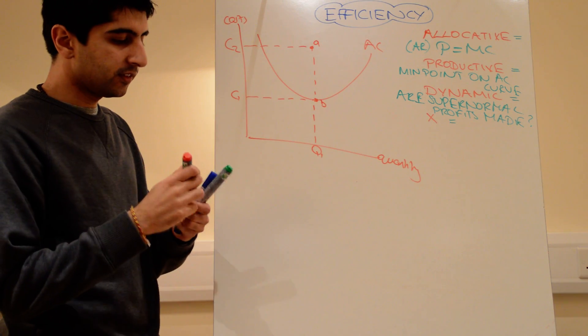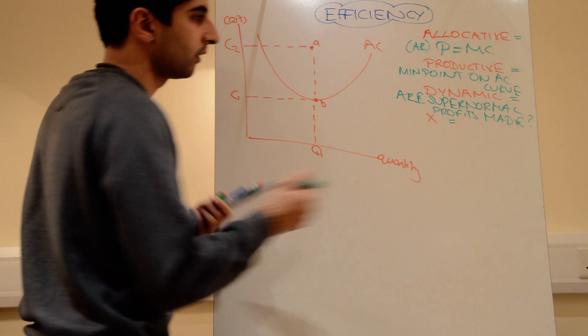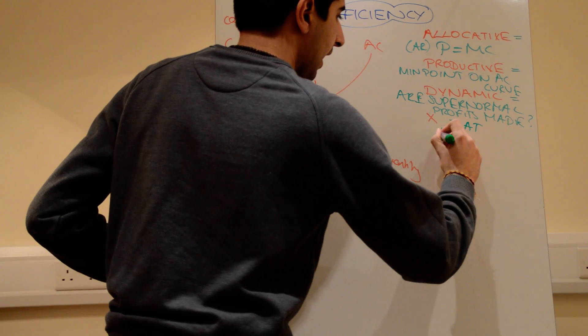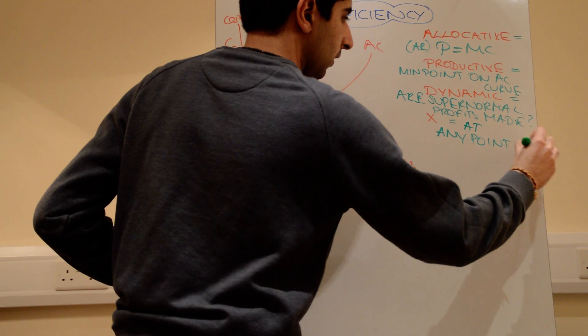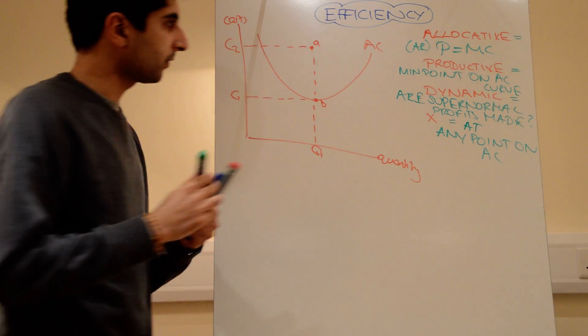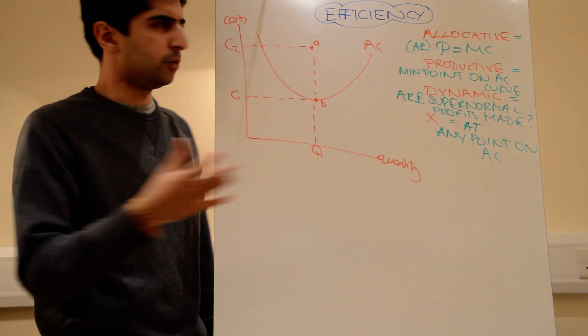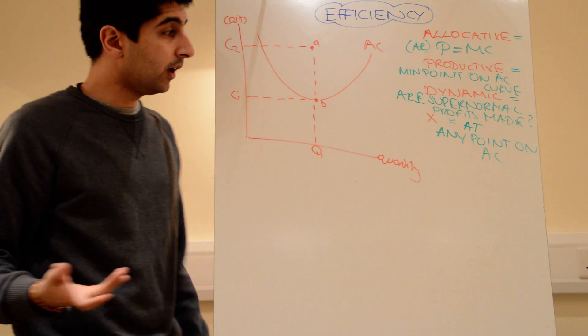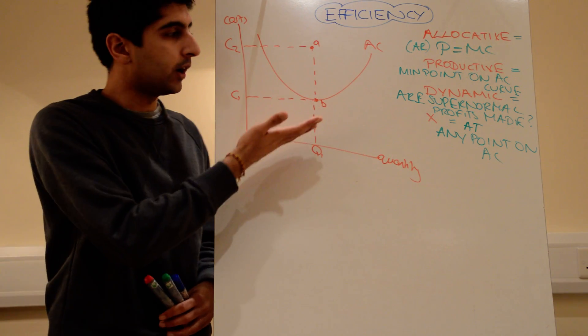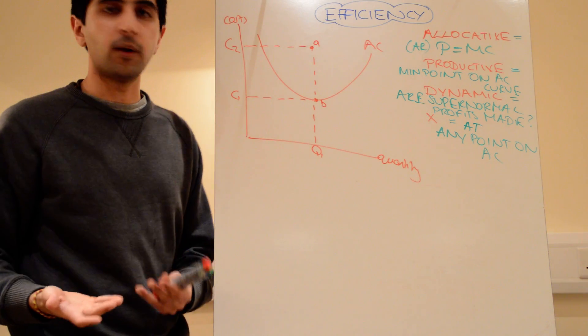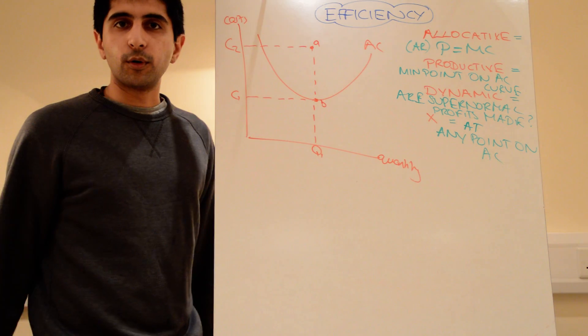So, X-efficiency very simply occurs at any point on the average cost line. You might think, well, surely that's a bit stupid if firms are at point A. But it can happen. Especially in market structures where there's not much competition, there might be no incentive to lower costs. There might be no need to do so.